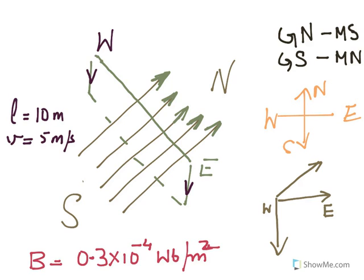The wire extending east to west is falling with a speed of 5 meters per second at right angles to the horizontal component of the Earth's magnetic field. The Earth's magnetic field is given as 0.30 × 10⁻⁴ Webers per meter square — this is the horizontal component of Earth. The question asks: what is the instantaneous value of the EMF induced in the wire, what is the direction of the EMF, and which end of the wire is at the higher electrical potential?